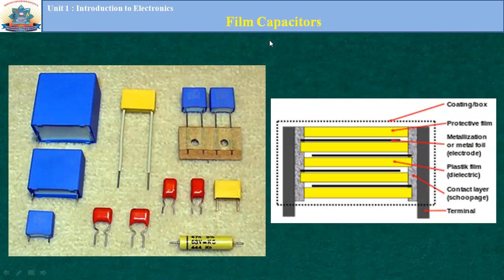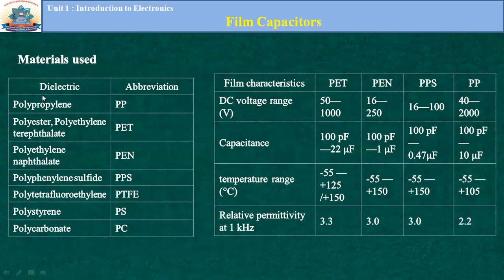Film capacitors use various films layered within the capacitor between two terminals. The dielectric layer is made of polymers — high polymers. Various films that can be used include polypropylene, polyester, polyethylene naphthalate, polycarbonate, and other polyesters. These are very commonly used types of dielectrics.